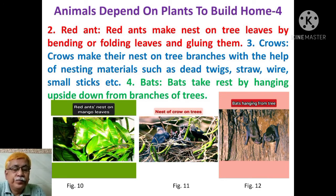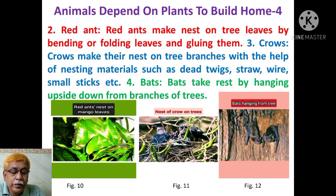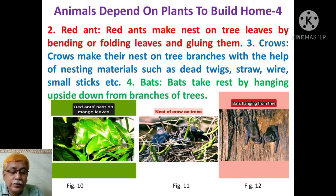2. Red ants: Red ants make nests on tree leaves by bending or folding leaves and gluing them together. 3. Crows: Crows make nests on tree branches with the help of nesting materials such as dead twigs, straw, wire pieces, small sticks, etc.